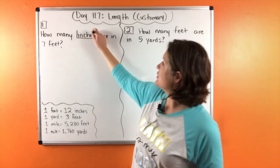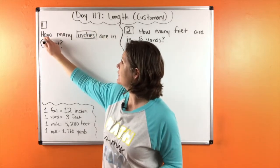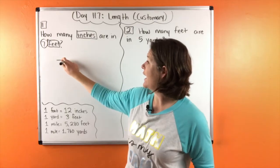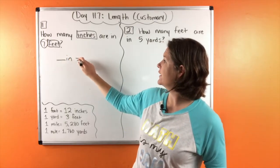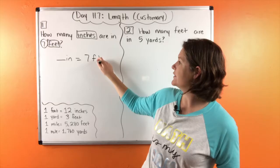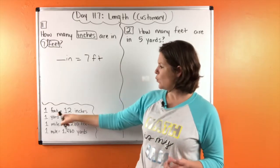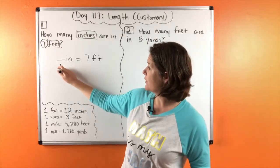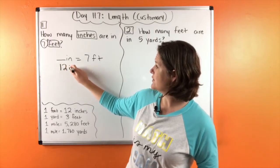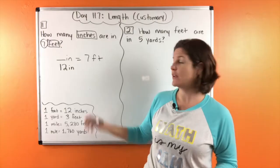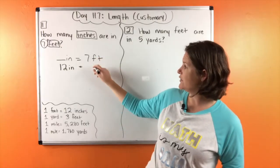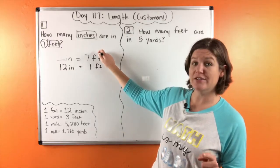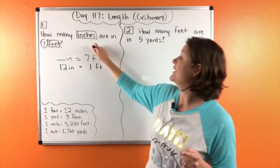So we have how many inches are in seven feet. So just like we've been practicing, let's rewrite this as how many inches are in seven feet. So right here it says that one foot equals 12 inches. So where it's inches, we'll put 12 inches matching up the units. And where we have feet, we're going to put one foot.